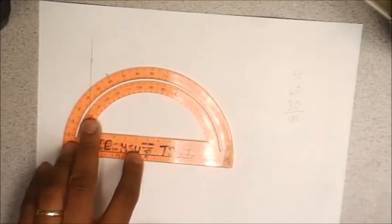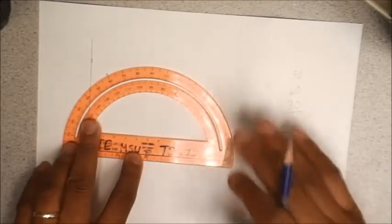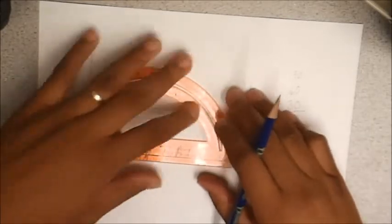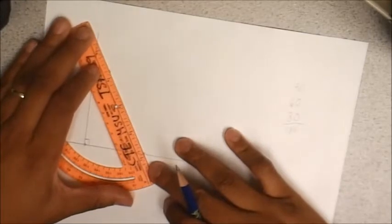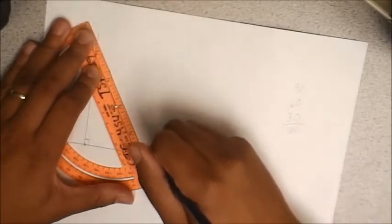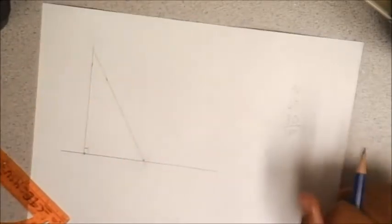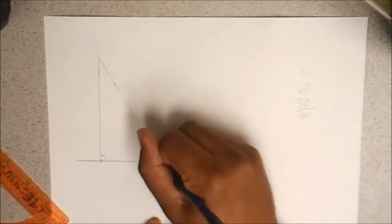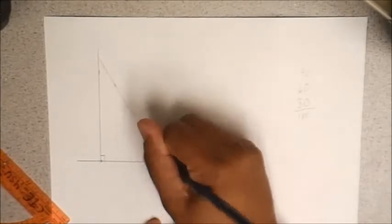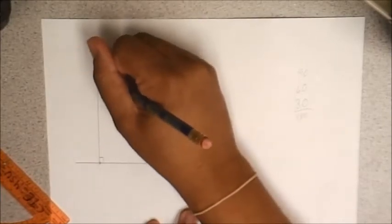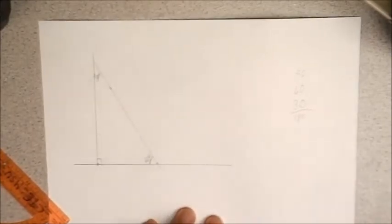And guess what we get to do. Absolutely right. We get to connect the dots. So now I am going to move my protractor. Get a nice straight line and connect the dots. So this is my 60 degree angle. And since this is my 60 degree angle that means this has to be my 30 degrees.